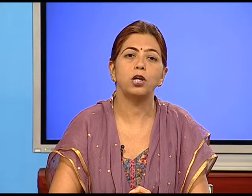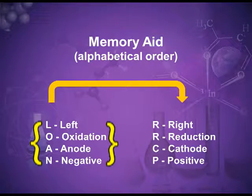Let me give you a memory aid for remembering which side is anode, which is the negative terminal, and which is cathode or the positive terminal. Just remember one word: LOAN — L-O-A-N. L means left and loss of electrons. O means oxidation. A means anode. N means negative terminal. So on the left hand side, loss of electrons takes place. Loss of electrons is known as oxidation. Oxidation takes place at the anode, and the anode is the negative terminal.